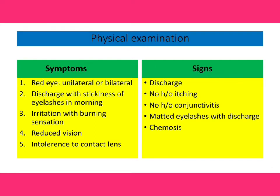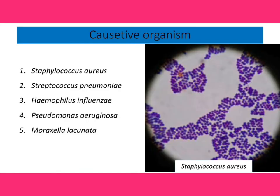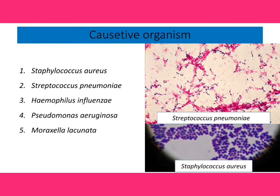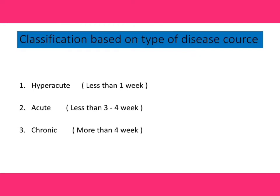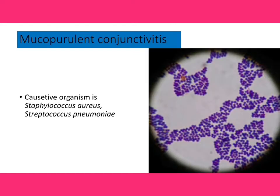Don't forget to ask about the history of itching and history of past conjunctivitis. The causative organisms for bacterial conjunctivitis include Staphylococcus aureus, Streptococcus pneumoniae, and Haemophilus influenzae. Classification based on disease course: hyperacute if infection occurs within one week, acute if between three to four weeks, and chronic if it persists more than four weeks.